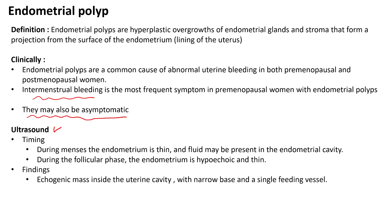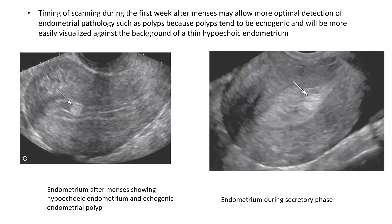Ultrasound examination can detect endometrial polyps, and the best time for examination is during menses or during the follicular phase. During menses, the endometrium is thin and fluid may be present inside the endometrial cavity. During the follicular phase, the endometrium is hypoechoic and thin. The finding is an echogenic mass inside the uterine cavity with a narrow base and a single feeding vessel. During the early follicular phase, the echogenic endometrial polyp can be clearly visualized against the hypoechoic endometrium, while during the secretory phase, when the endometrium becomes echogenic, the echogenic endometrial polyp may be difficult to visualize.